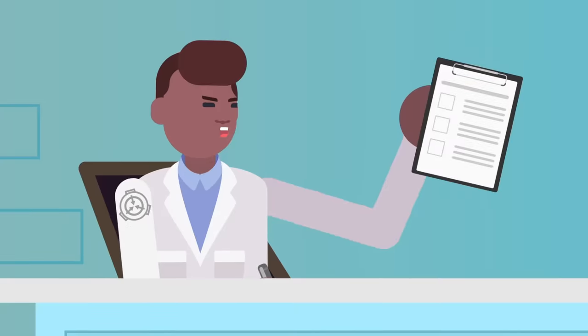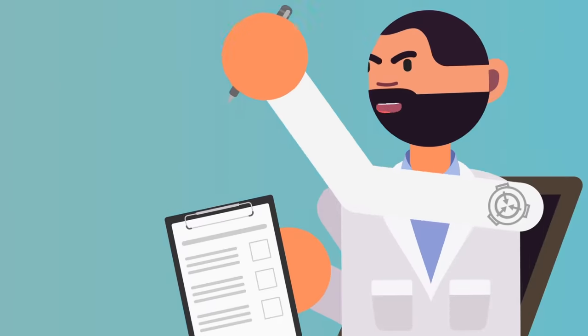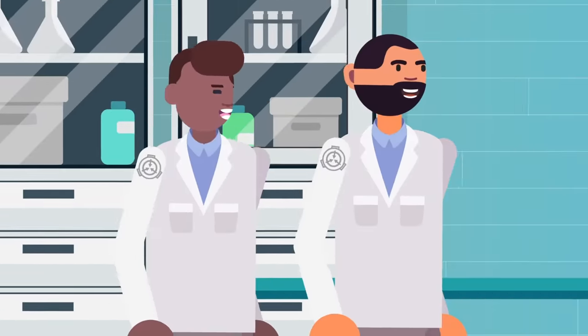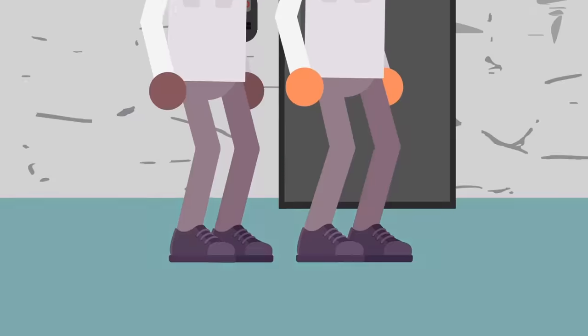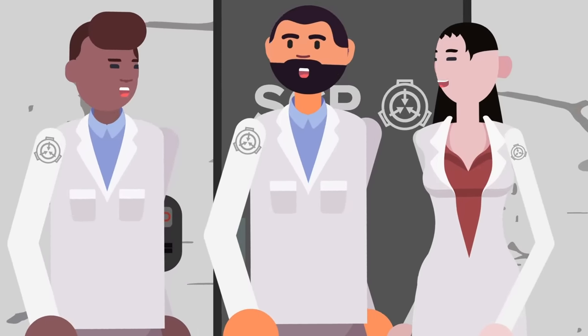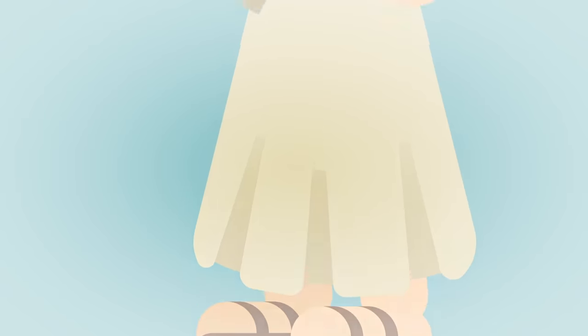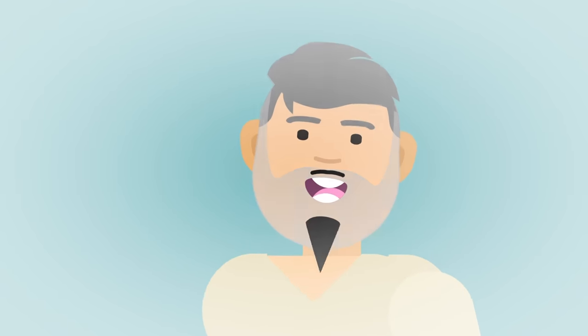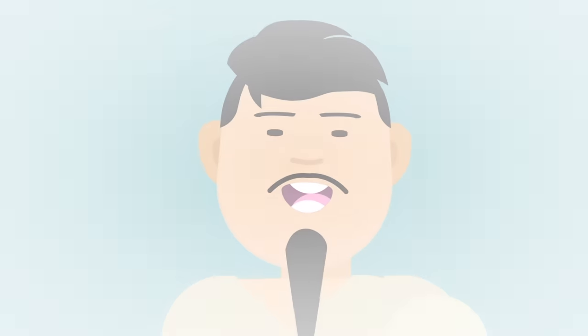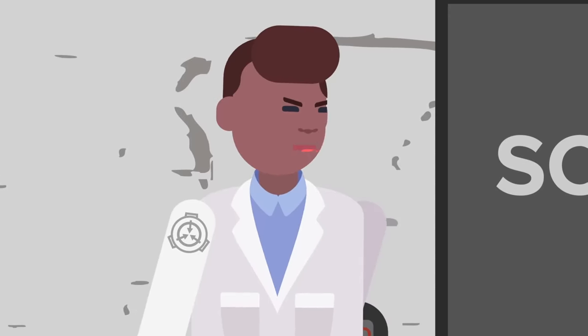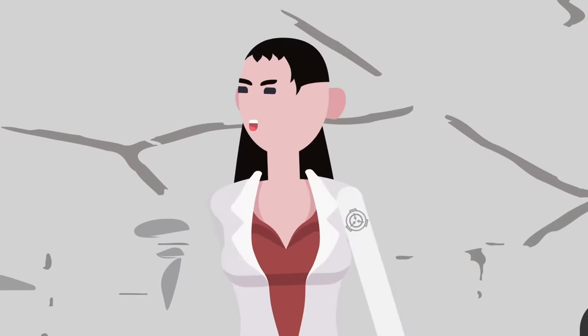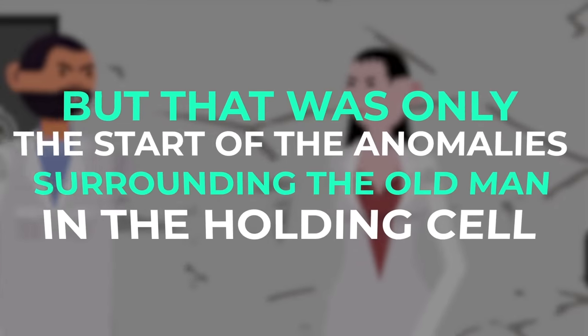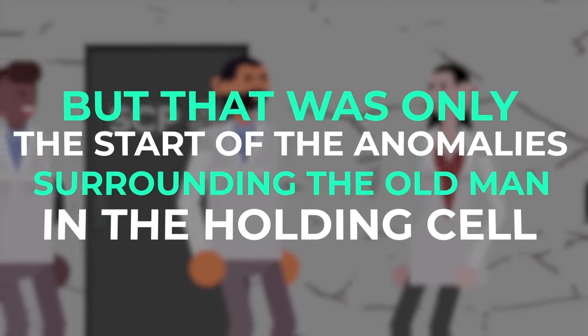The two doctors quarreled, unable to square their differing perceptions. They decided to bring in a third impartial view, Dr. Wan. She came back with her assessment: Older male, Asian in appearance, possibly Chinese. Whatever SCP-343 was, he seemed to be perceived by each staff member as close in appearance to their own race. But that was only the start of the anomalies.